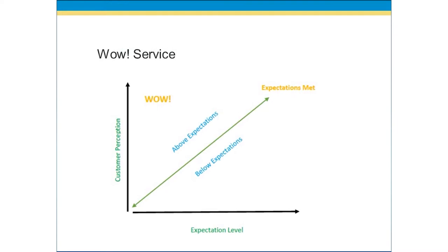Have you ever thought about wow service? What does it take to wow somebody? If we're going to wow somebody, we have to go above expectations. The customer perception is one piece of the puzzle. The expectation level is really what we're trying to meet. When a customer comes to us, they have a perception of what you're able to do for them. We try to determine what their expectation is so we can meet it through our products and services.